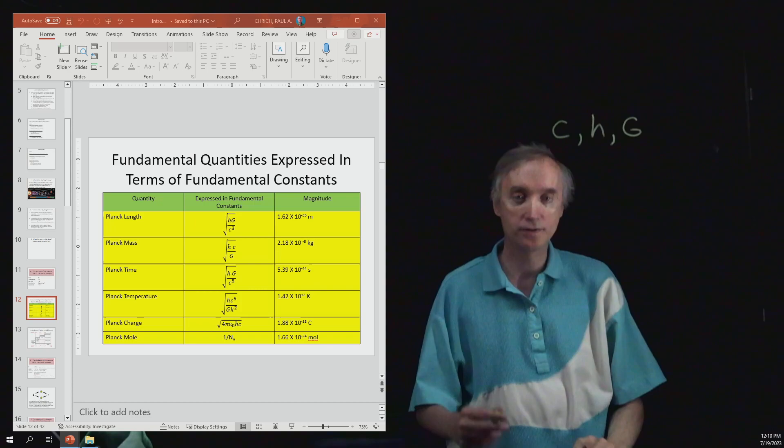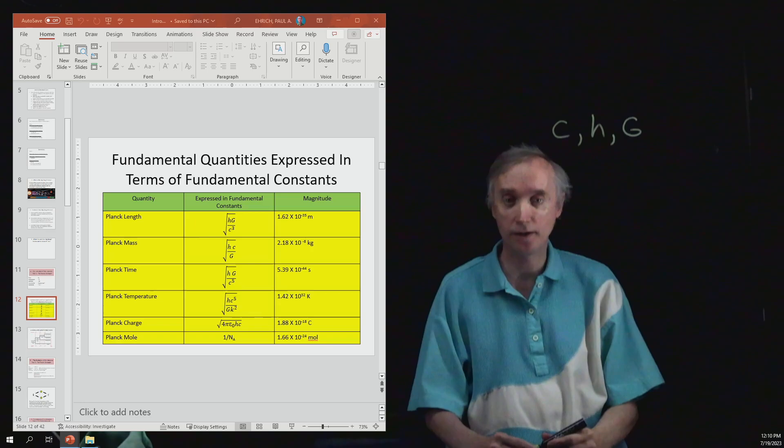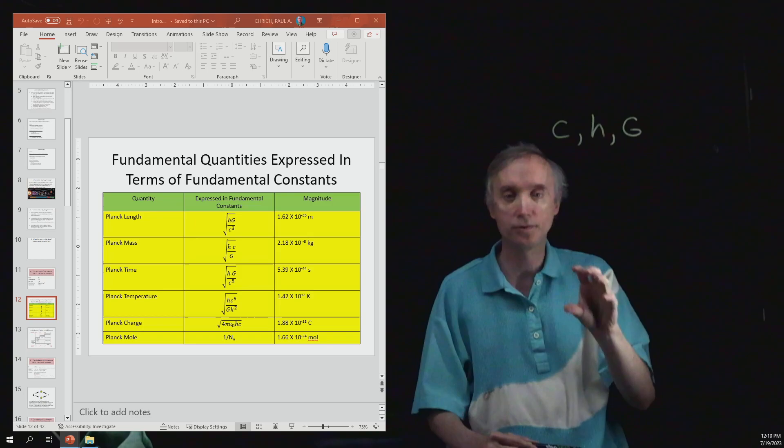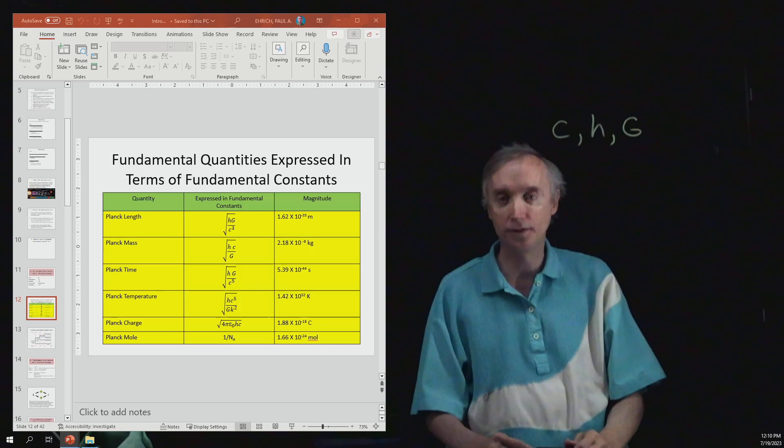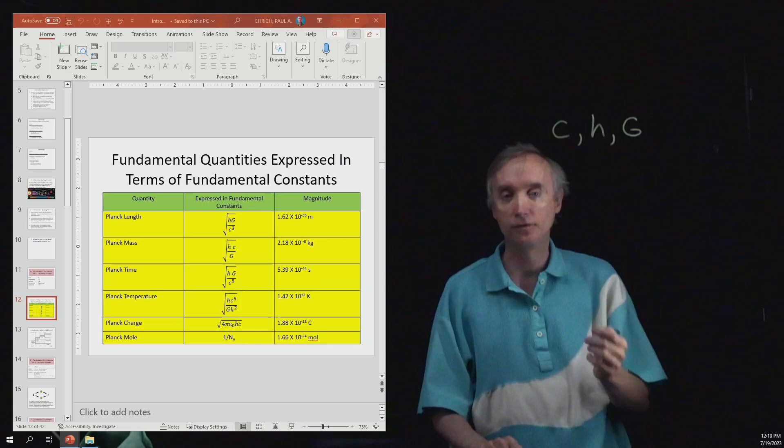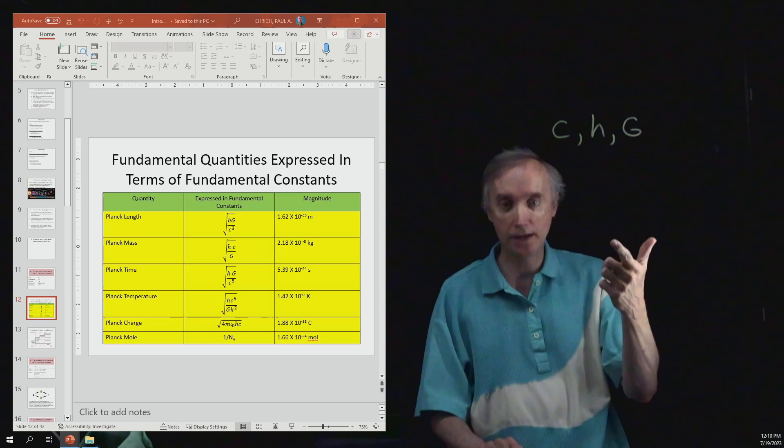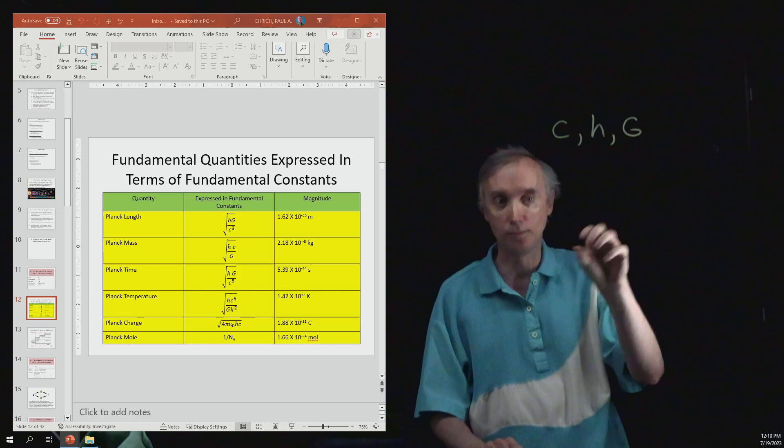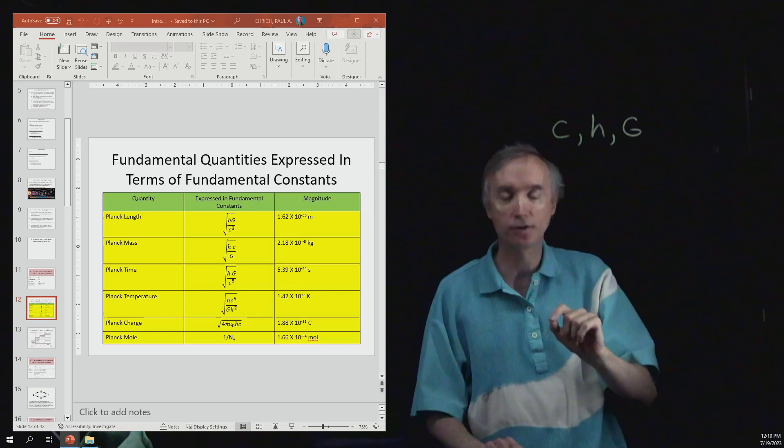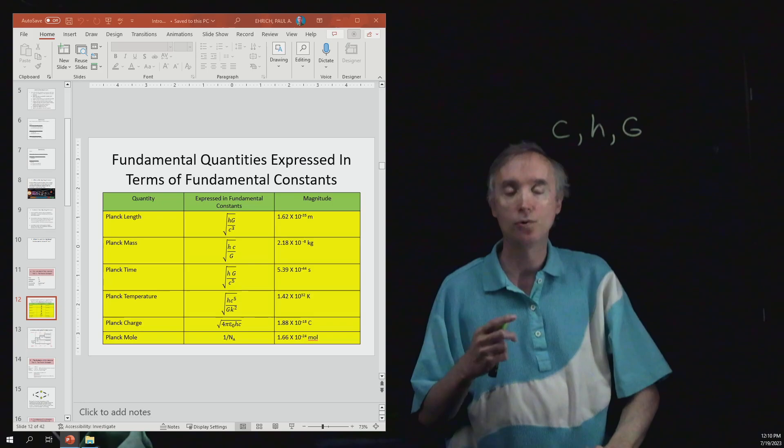So scientists, with obviously too much time on their hands, started taking these fundamental constants and putting them together to see if you could make fundamental quantities in nature. If you recall, we talked about the seven fundamental quantities in the metric system: length and mass and time and temperature and electrical charge and then the mole.